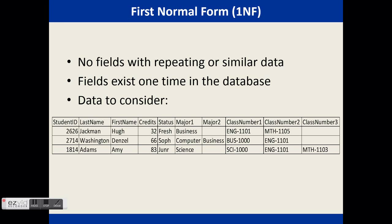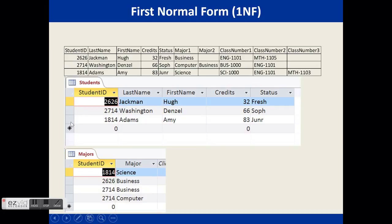The design change to reach first normal form is to create a student majors table. This allows a student to have a limitless number of majors. We have a student ID and then a major that relates back to the students table.